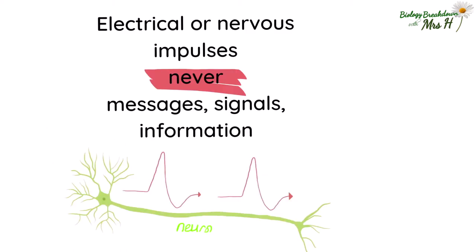The nervous system consists of specialised cells called neurons. Sensory neurons carry impulses from the receptor to the relay neurons in the central nervous system, and motor neurons carry impulses from the central nervous system to the effectors. Never use the words messages, signals, or information. Instead use electrical impulses, nervous impulses, or just impulses.